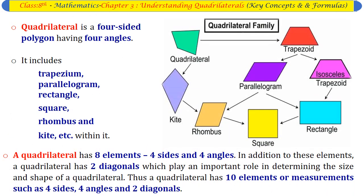A quadrilateral is a four-sided polygon having four angles. It includes trapezium, parallelogram, rectangle, square, rhombus, and kite, etc. A quadrilateral has eight elements — four sides and four angles. In addition, a quadrilateral has two diagonals which play an important role in determining its size and shape. Thus, a quadrilateral has ten elements or measurements: four sides, four angles, and two diagonals.